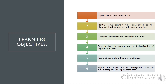For today's lesson, these are our learning objectives: explain the process of evolution; identify some scientists who contributed to the historical development of evolutionary thoughts; compare Lamarckian and Darwinian evolution; and describe how the present system of classification of organisms is based.